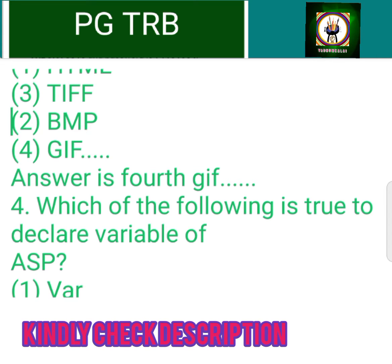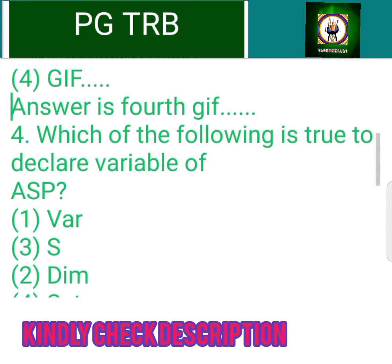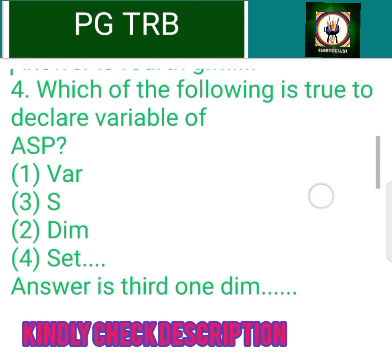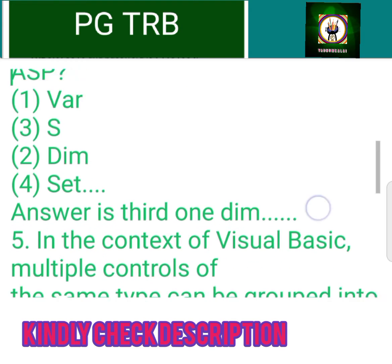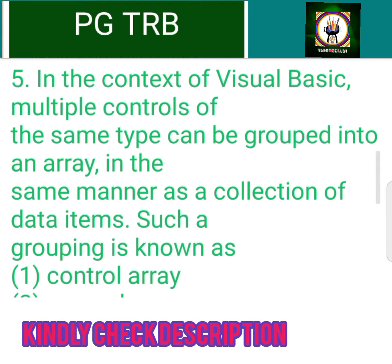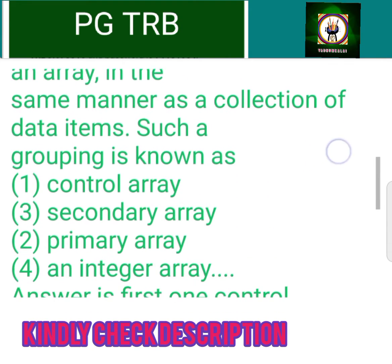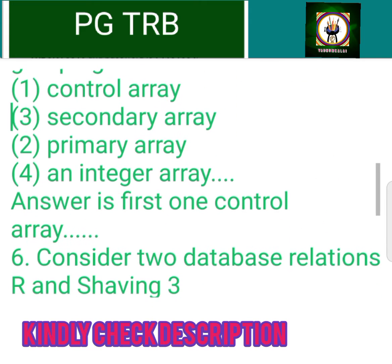In the context of Visual Basic, multiple controls of the same type can be grouped into an array, in the same manner as a collection of data items. Such a grouping is known as: 1. Control array, 2. Primary array, 3. Secondary array, 4. Integer array. Answer is 1st: Control array.